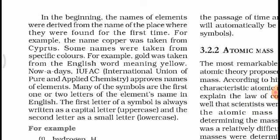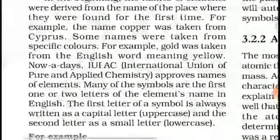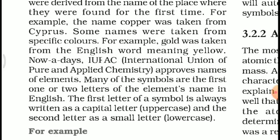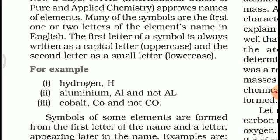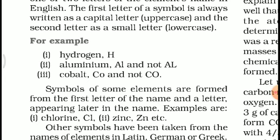Nowadays, IUPAC — the International Union of Pure and Applied Chemistry — approves the names of elements. Many of the symbols are the first one or two letters of the element's name in English. The first letter of a symbol is always written as a capital letter and the second letter as a small letter. For example: hydrogen is H; aluminium is Al (capital A, small l); cobalt is Co (capital C, small o — not CO, which would be carbon monoxide).